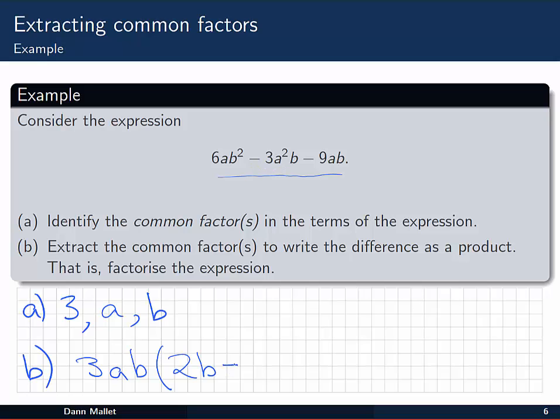Then for the second term it's going to be minus. We've already got the 3. We need another a. And we already have the b. Again we need a minus. 3 times 3 would make 9. And a and b are already there. And we can check that again.